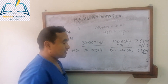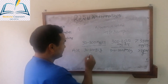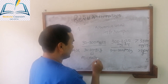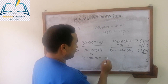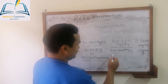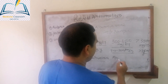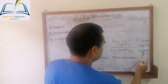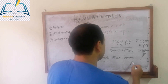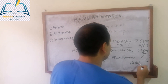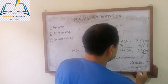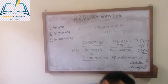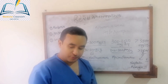If the albumin excreted in the urine is between 30 and 300 milligrams per 24 hours, we label this condition microalbuminuria. If you see 300 to 3,500, it is called macroalbuminuria. And if you see more than 3,500 milligrams per 24 hours, this is called nephrotic range proteinuria.